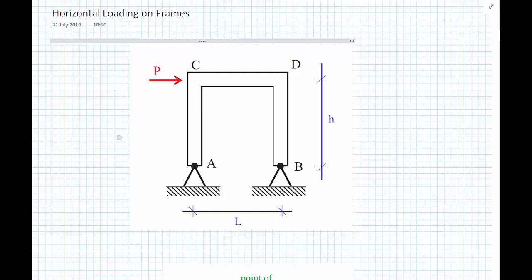We're going to use some of the concepts where we identify points of inflection and make other assumptions to help us analyze this structure using statics alone. We look at the structure we're going to first examine: a single bay frame where the span between the columns is L and the height of the frame is H.